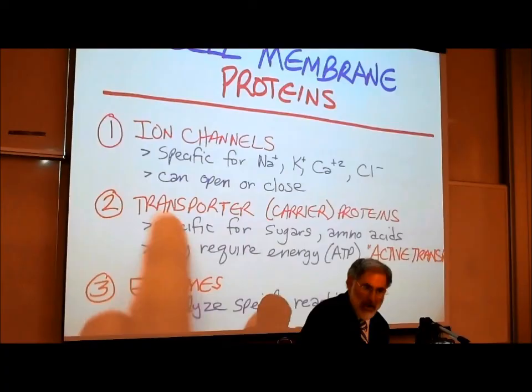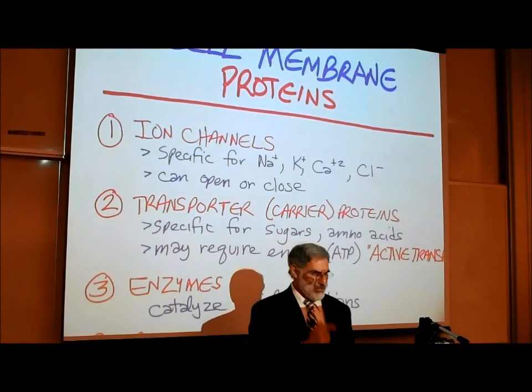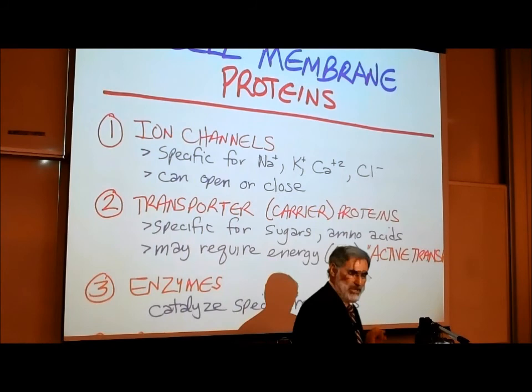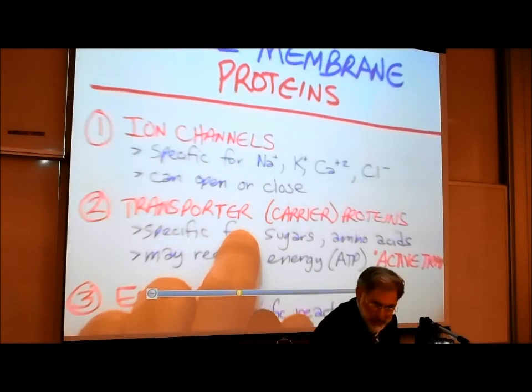What are the roles of these proteins in the cell membrane? Some of these proteins act as ion channels — openings for specific ions to flow through. Examples of ions are sodium ions, potassium ions, calcium ions, and chloride ions.